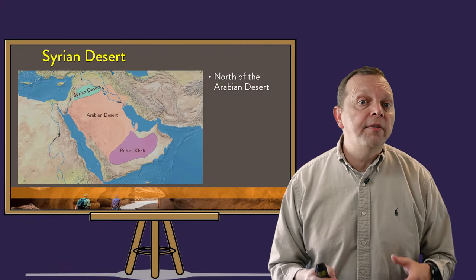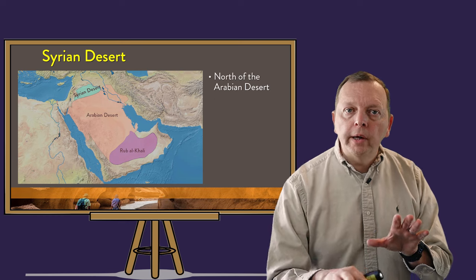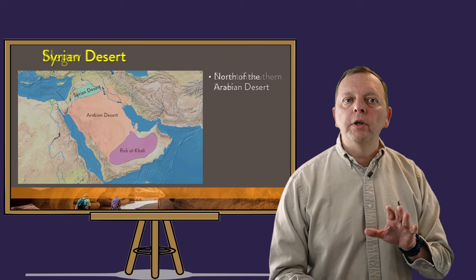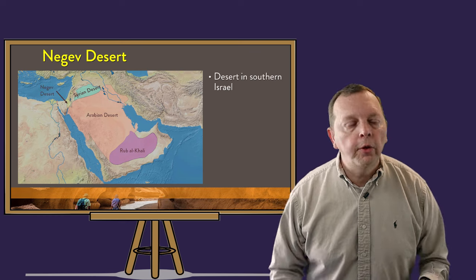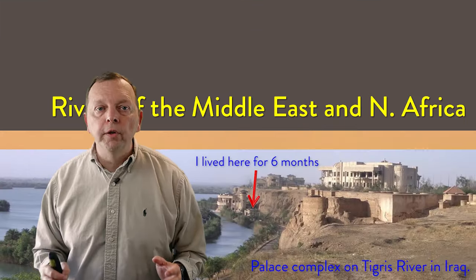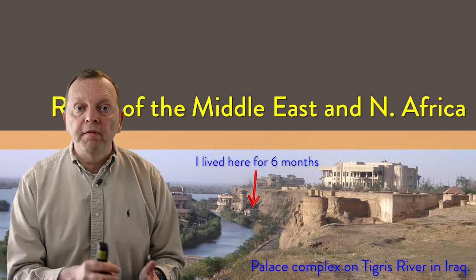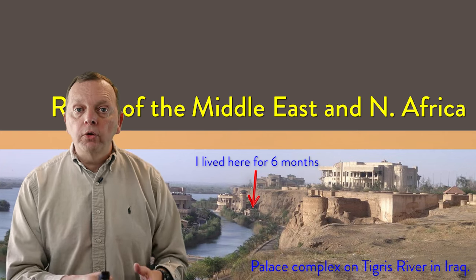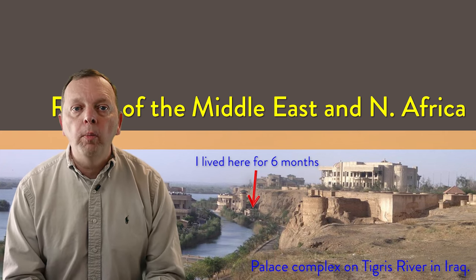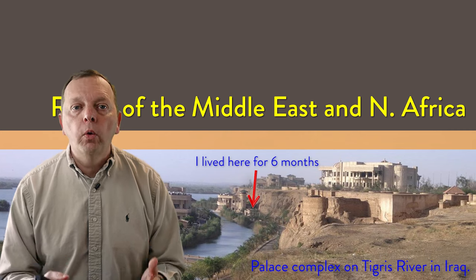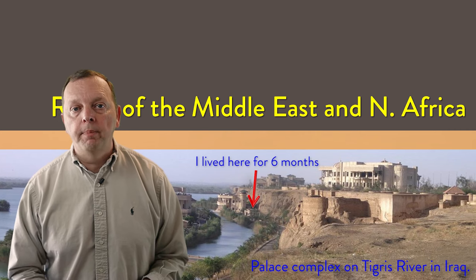North of the Arabian Desert is the Syrian Desert. In the southern portion of Israel, we find the Negev Desert. There are rivers that flow through these deserts, and more than just providing scarce water to the region, these rivers have been the home of the world's earliest cities and empires.